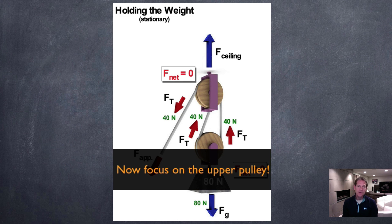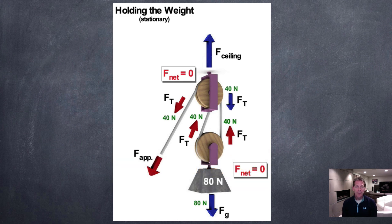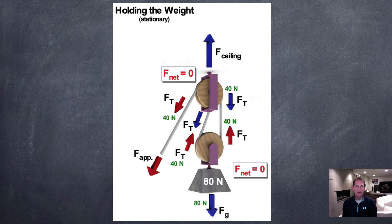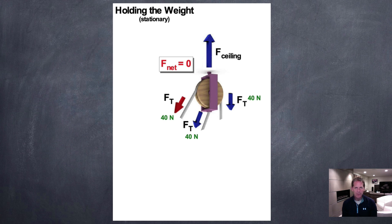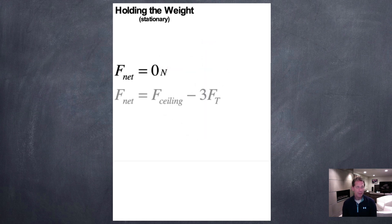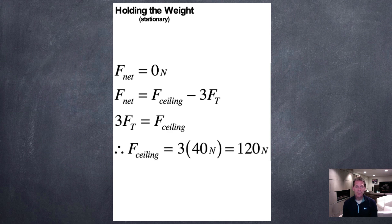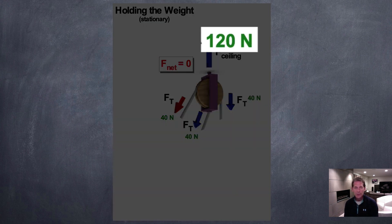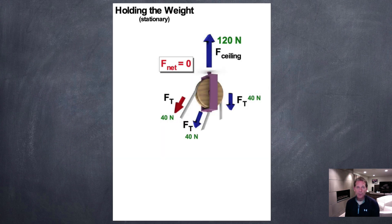Now focus on the upper pulley to find the force on the ceiling. The upper pulley experiences the force of tension down from that rope — and remember, the rope pulls on both ends — plus the force of tension from the left-hand rope. So the upper pulley sees three forces directed downward and the ceiling force upward. Net force is zero, so the ceiling force equals three times the force of tension, which is 120 newtons. So we only had to apply 40 newtons to lift the weight, but the ceiling must support 120 newtons.